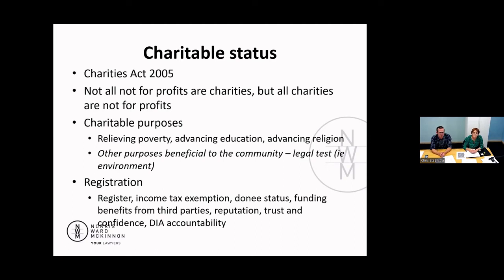Charitable status involves a register — you apply for registration, the Commissioner checks the documents, and there's scrutiny involved. Once you've satisfied the Commissioner of all the requirements, you go on the public register. It's a very public process with a publicly searchable register. People can also search for your rules, constitution, or trust deed — all those documents become public at that point.